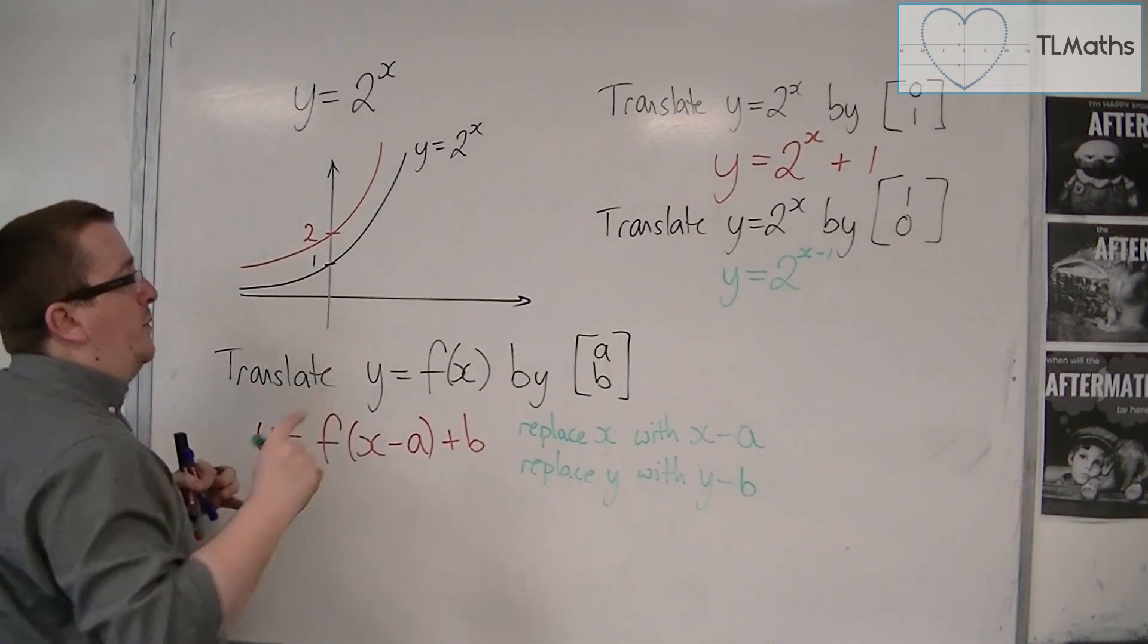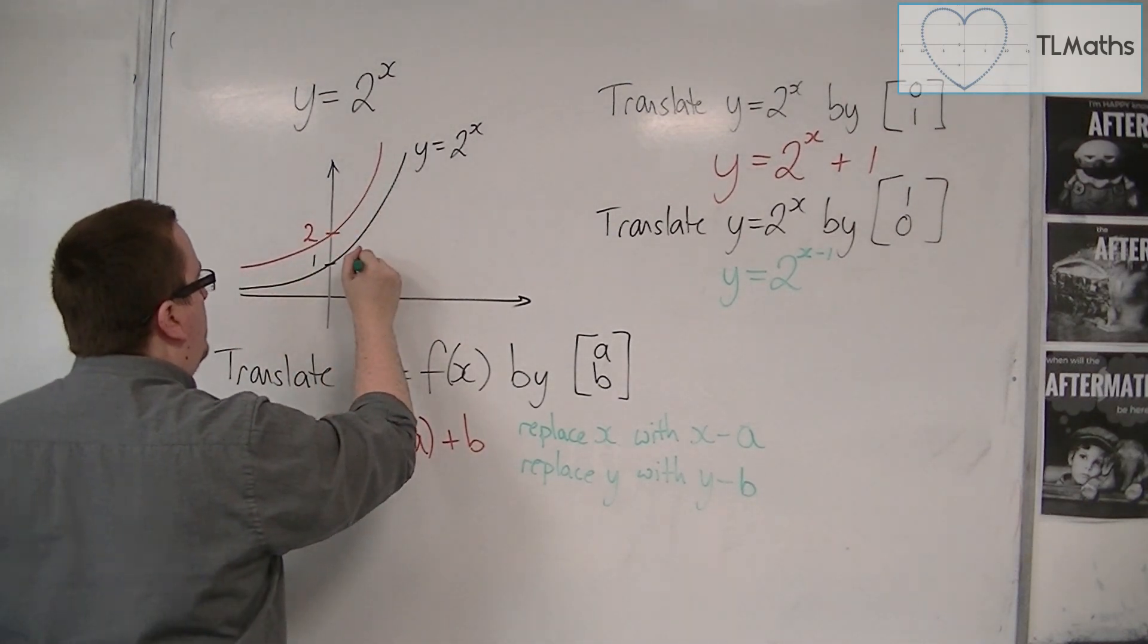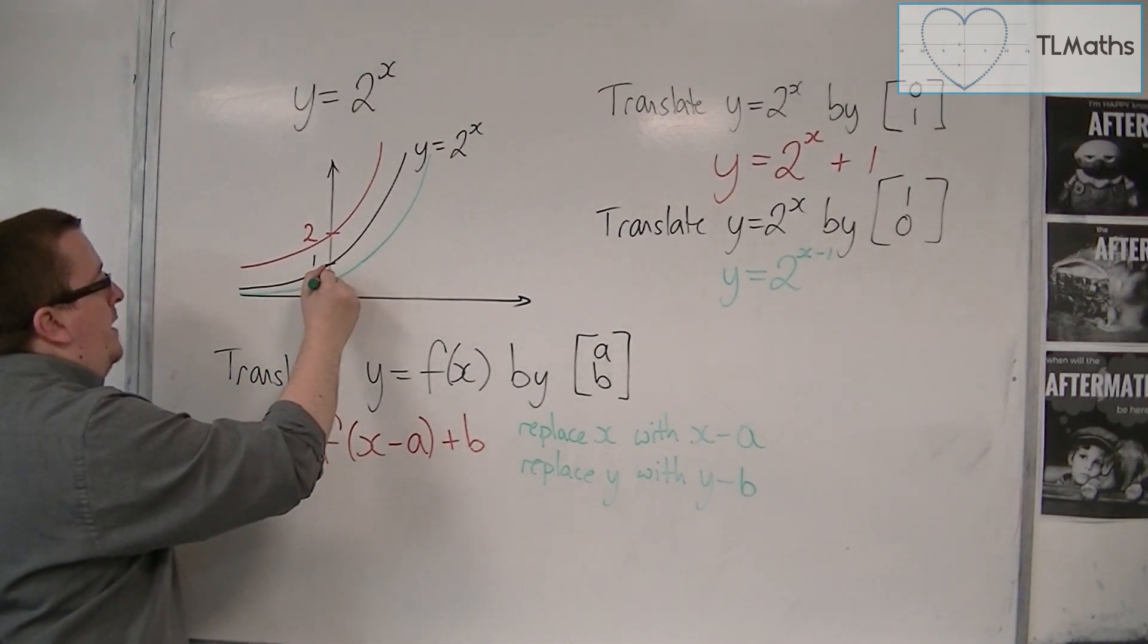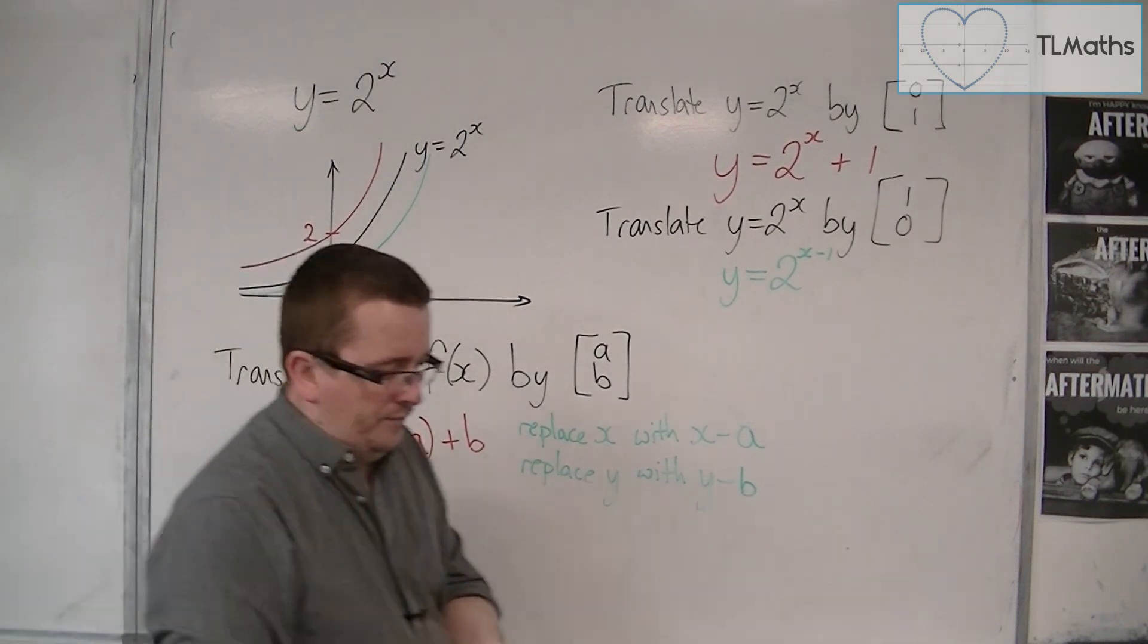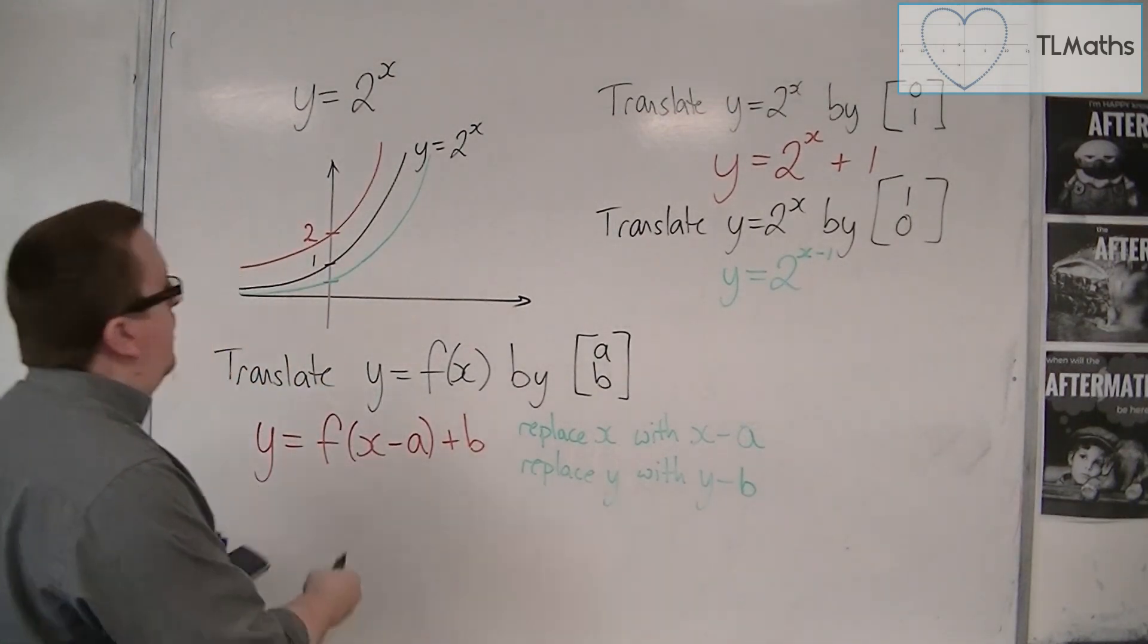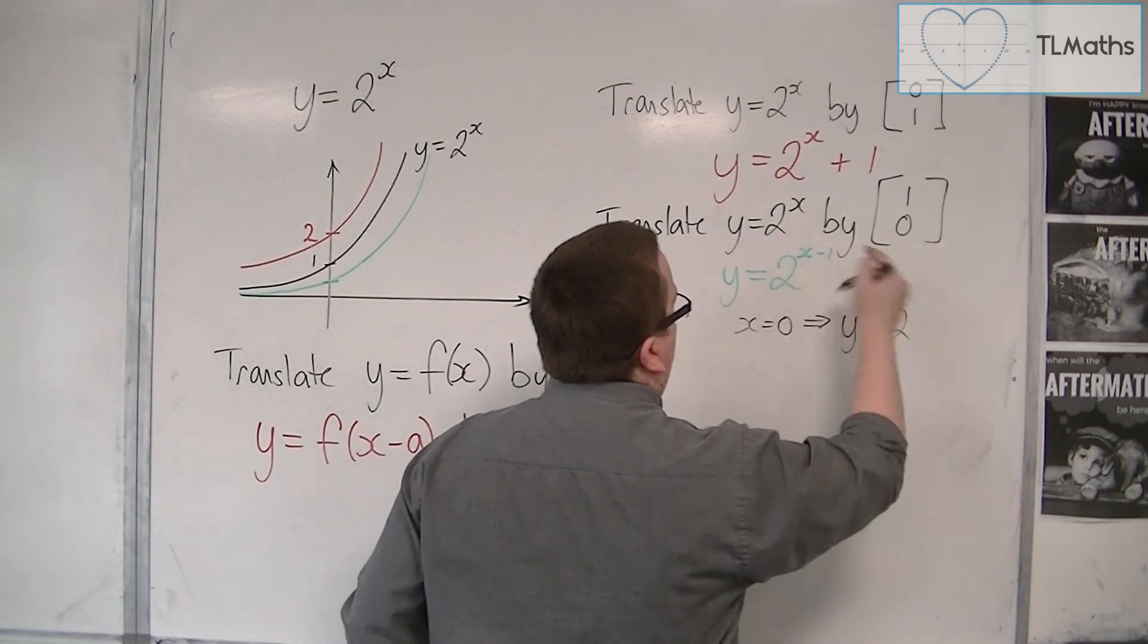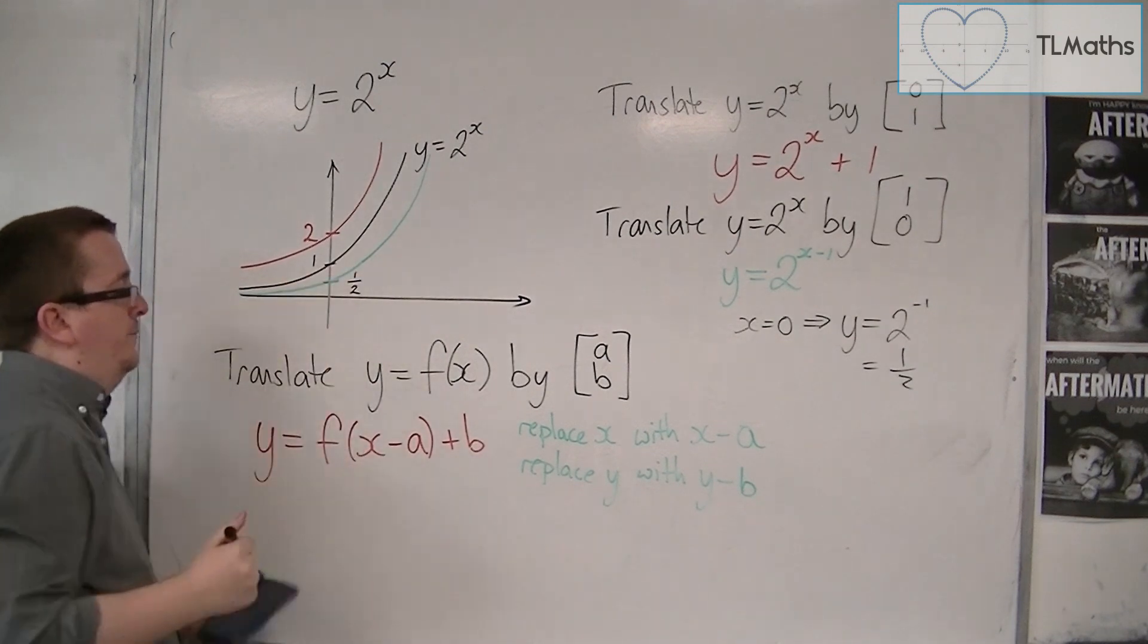So, that now, if it's y equals 2 to the x minus 1, it has translated this black curve one unit to the right. So, it now matches that one. Now, I haven't actually written down what y value it is. What is the y value? Well, this is where you could effectively bring in some logarithms. Because you're now asking where x is 0. And x is 0 when y equals 2 to the minus 1, which is a half. And so, this point here is 1 half.